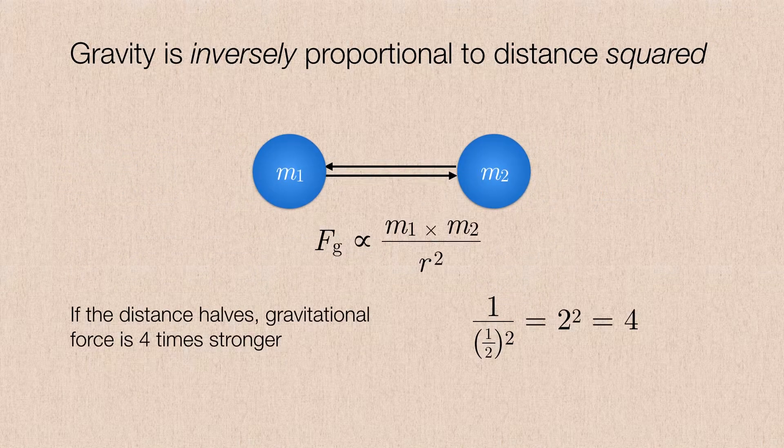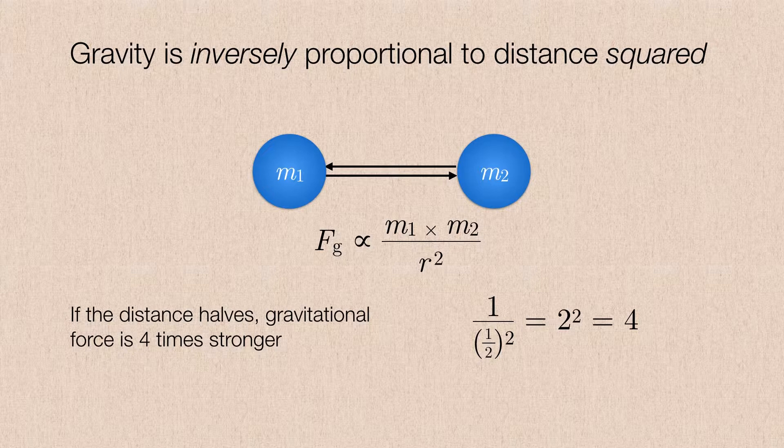Likewise, if we were to cut the original distance between the two objects in half, that has the effect of quadrupling the gravitational force between them.